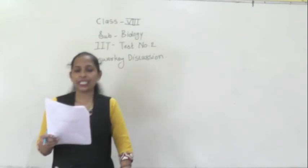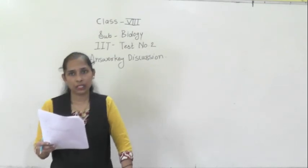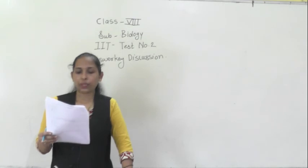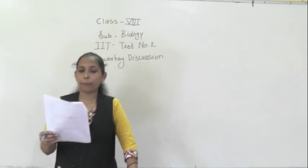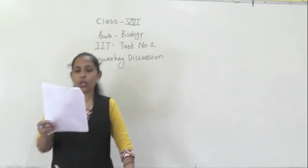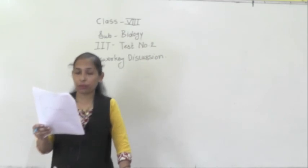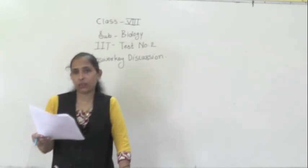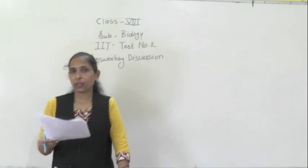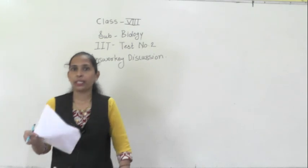Question number twenty-two: the longest cell in the human body is the nerve cell. Question number twenty-three: the non-living structure in a plant cell is the cell wall, option B. Question number twenty-four: the main difference between a human cheek cell and an onion peel cell is the presence of a cell wall in the onion peel cell, since the human cheek cell is an animal cell and the onion peel cell is a plant cell.